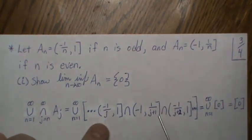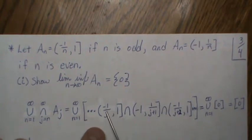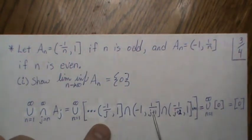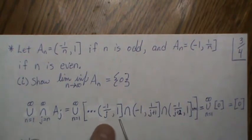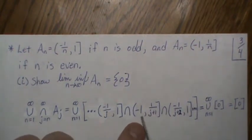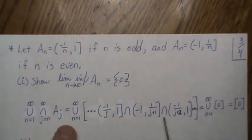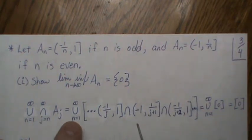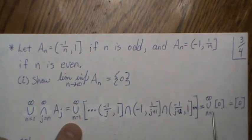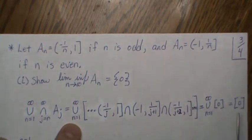Notice that as N gets larger, this shrinks to 0 and this shrinks to 0. So ultimately in the limit we're taking the intersection of [0,1] and [-1,0] for any N. The intersection of those two is just the zero element, and when you union the same thing over and over you just get zero.